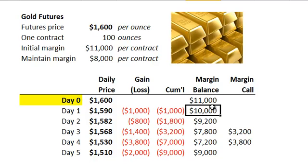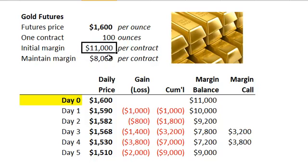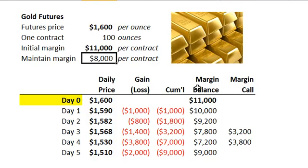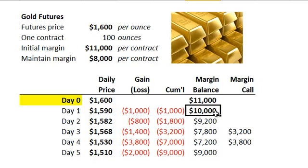Here is the real point of the question. The question wants you to understand initial margin and maintenance margin. The initial margin is the $11,000 that Alan had to deposit when he initiated the long position. The maintenance margin is the number that the account needs to stay above. So as long as the margin balance remains above $8,000, Alan's okay and there's not a margin call. On the first day, the $1,000 loss drops the margin balance from $11,000 to $10,000, but the maintenance margin is only $8,000, so there is no margin call.